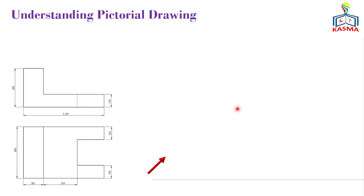Looking at this surface, the front view is just an L-shape, and the top view is just one rectangle and then one T-shaped object. The first thing is to understand the meaning of the surface and also the meaning of the lines. Here is one hidden line — that means it indicates that there is a surface which is covered by the other surfaces.